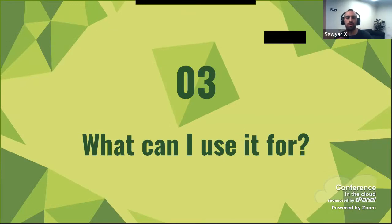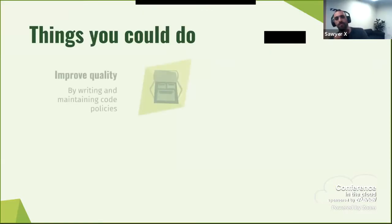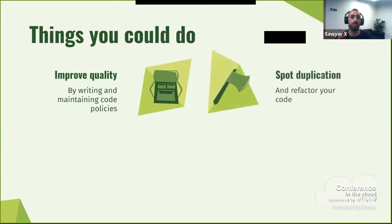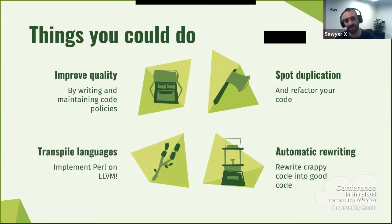What could you use Guacamole for? Things you could do with it: first, you could improve quality — you could write and maintain code policies, stuff like Perl::Critic, you could do with Guacamole. You could spot duplications and refactor your code. You could do some automatic rewriting, which is really nice. And of course you can transpile languages. I'm going to go into each one separately, starting with linting.